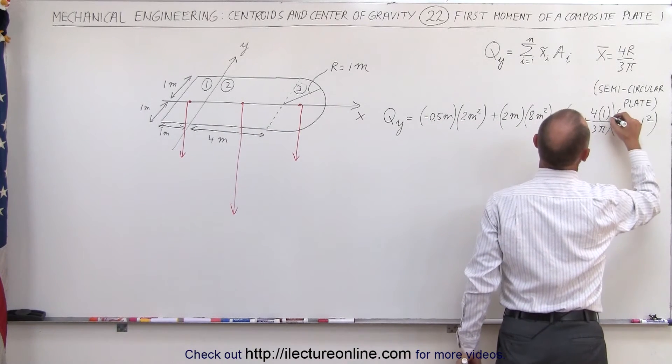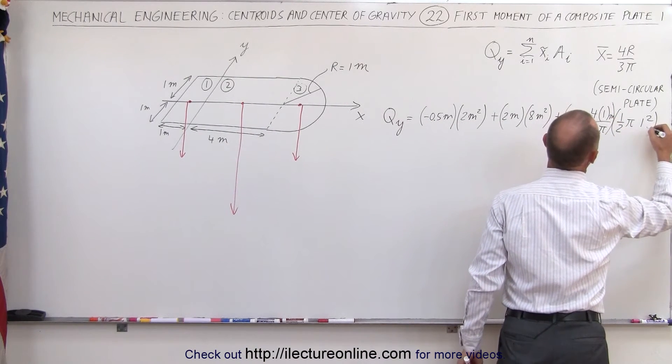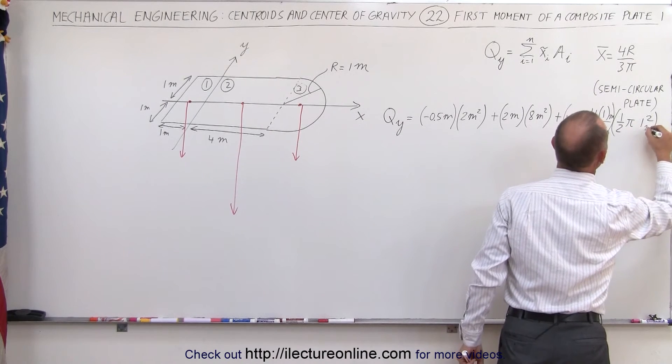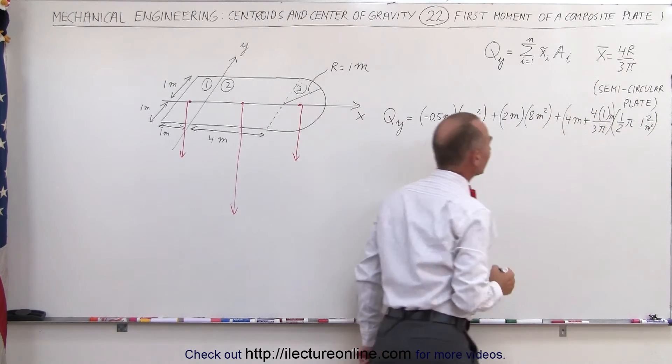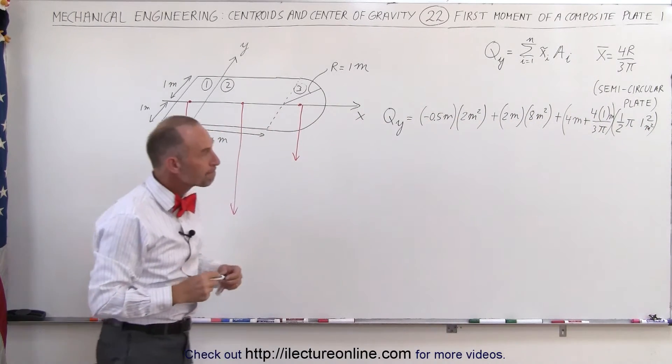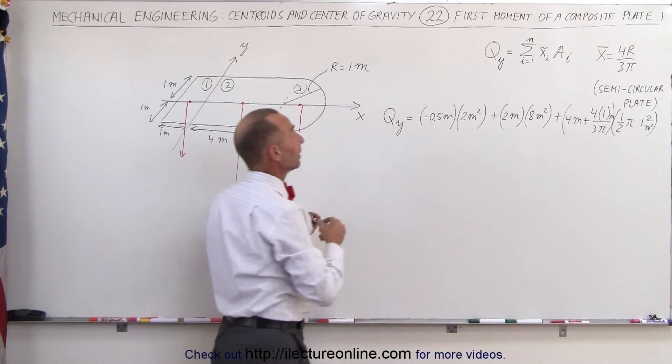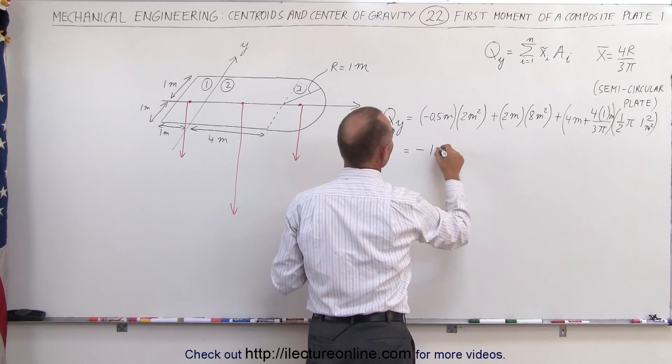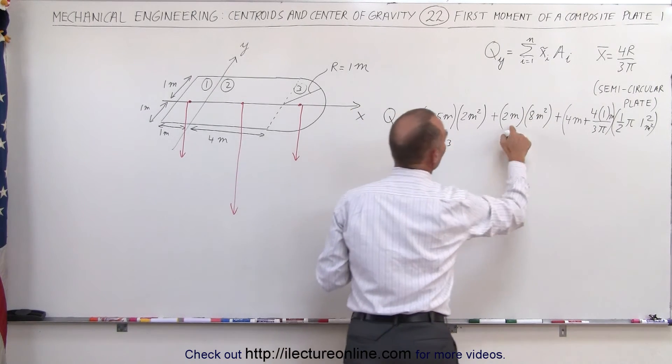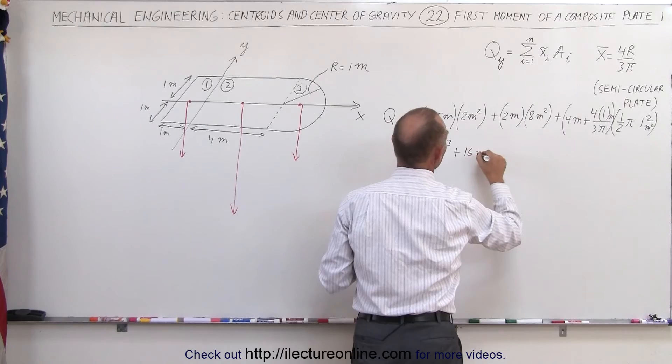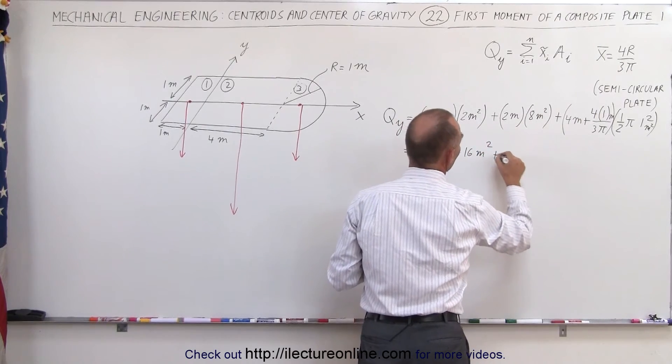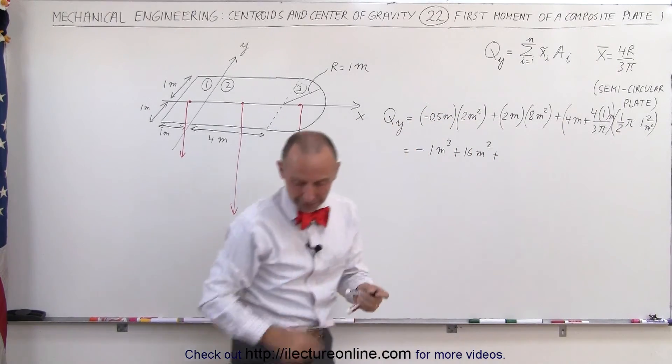And I need to put meters here, and I need to put meters squared there, if I want to keep the units the same. Simplifying, this is equal to minus 1 meter cubed plus 16 meters cubed plus, and for that I'm going to grab my calculator.